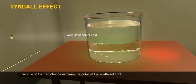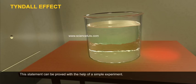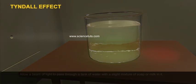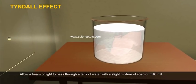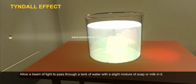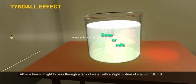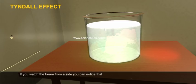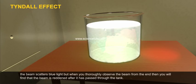The size of the particles determines the color of the scattered light. This statement can be proved with a simple experiment. Allow a beam of light to pass through a tank of water with a slight mixture of soap or milk in it. If you watch the beam from the side, you can notice that the beam scatters blue light. But when you thoroughly observe the beam from the end, you will find that the beam is reddened after it has passed through the tank.